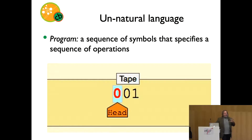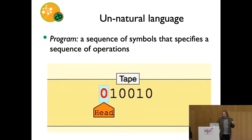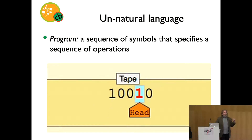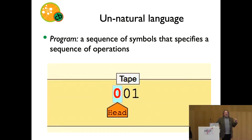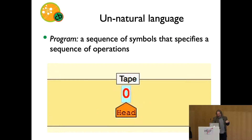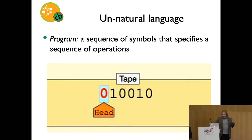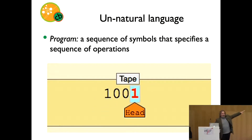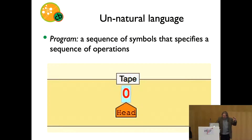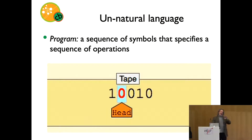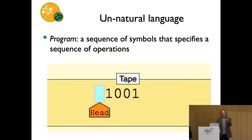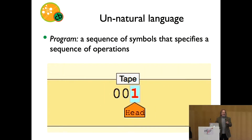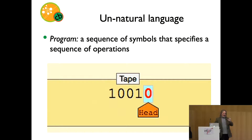Turing immediately saw the relationship to human language — that this symbolic language might have something to do with human language. He wrote the famous article asking 'Can machines think?' which described the relationship between formal languages and human languages and invented the imitation game, the Turing test. The original article is interesting because it was about whether men could imitate women, and then whether a computer could substitute for the man.